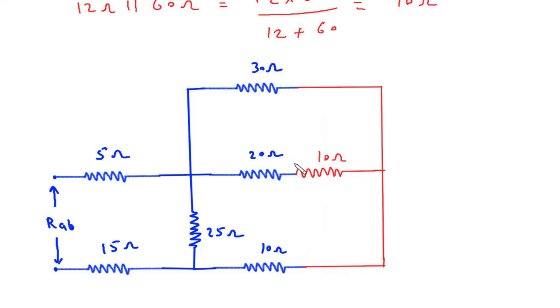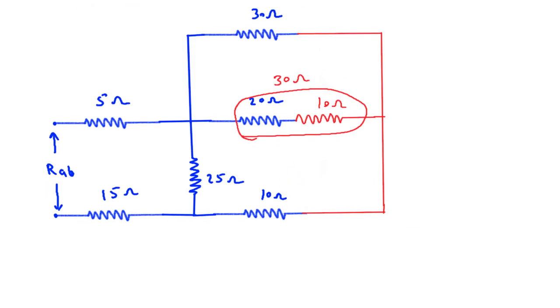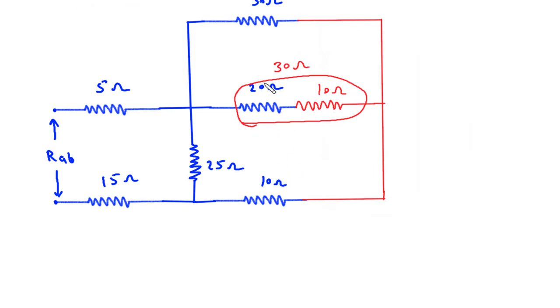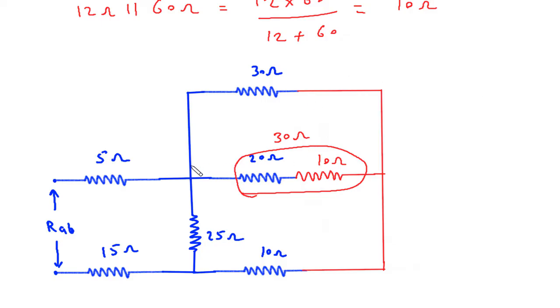Now this 20 ohm and 10 ohm are in series, so this will be 30 ohm. This 30 ohm and 30 ohm are in parallel, so this 30 ohm and 30 ohm in parallel will make 15 ohm resistance.